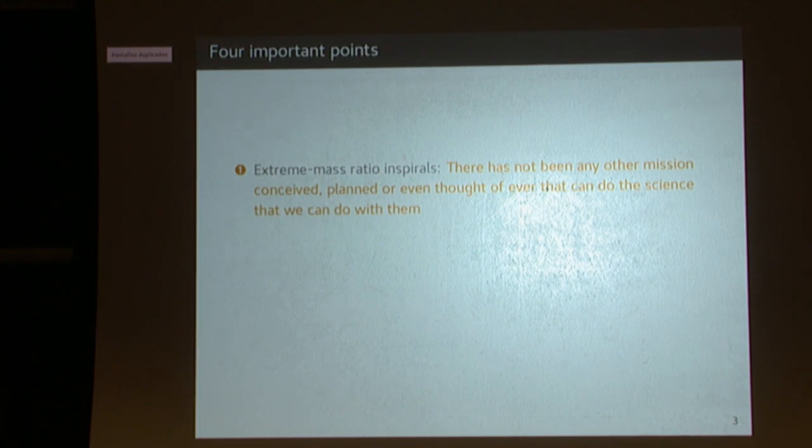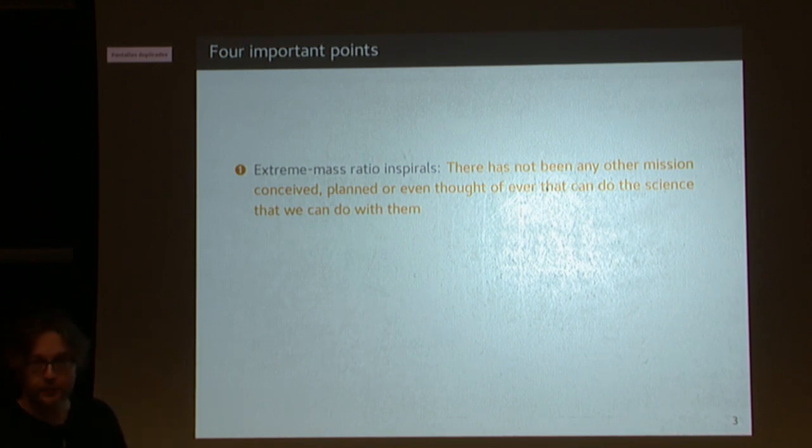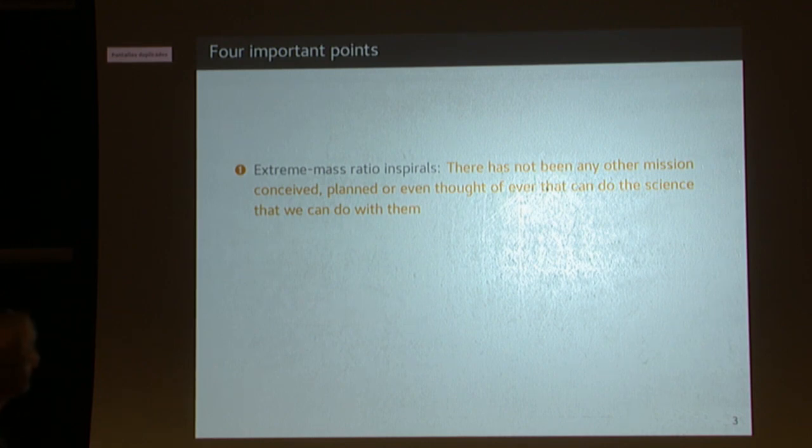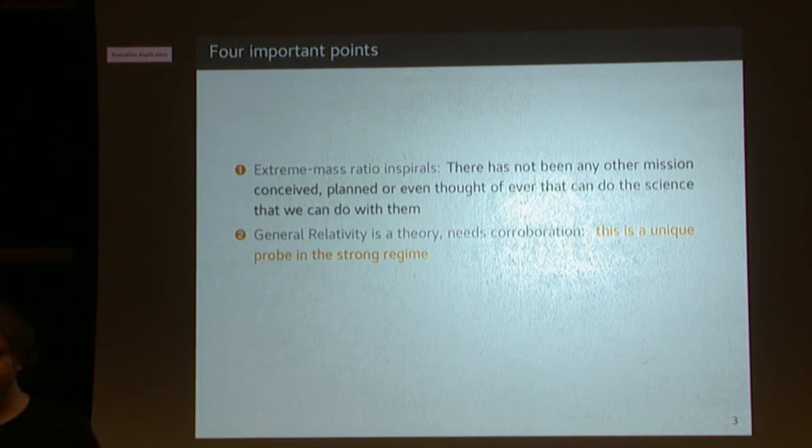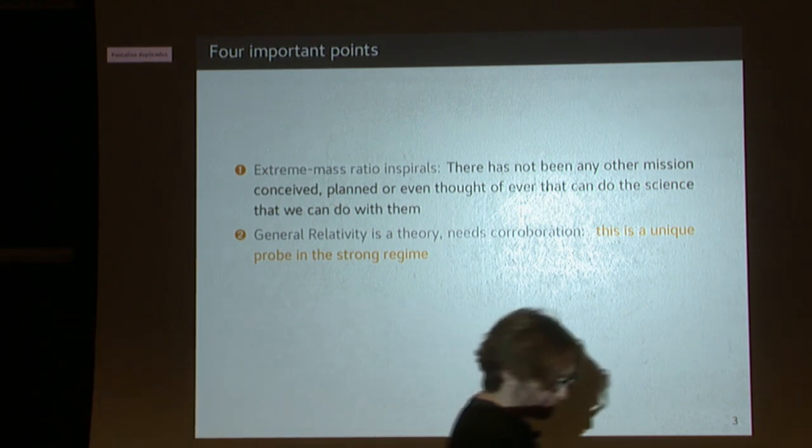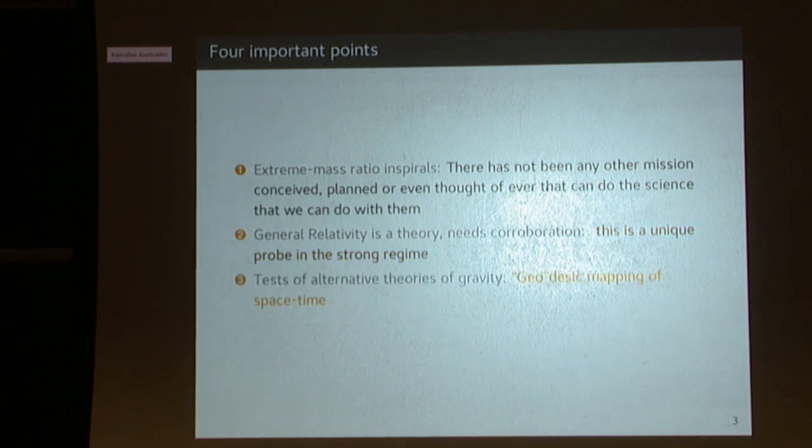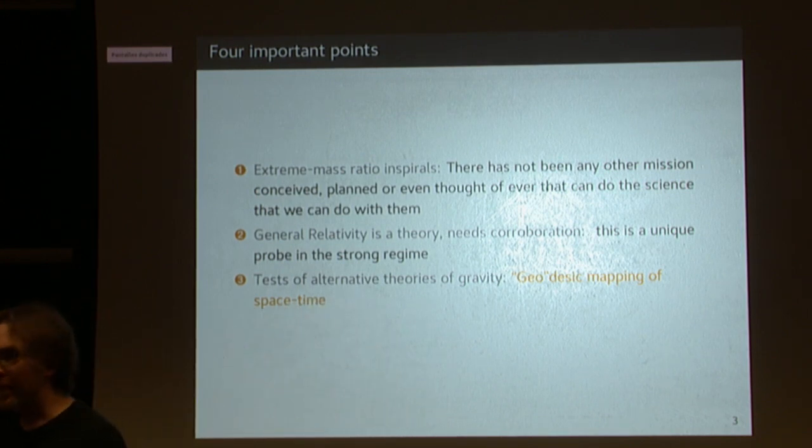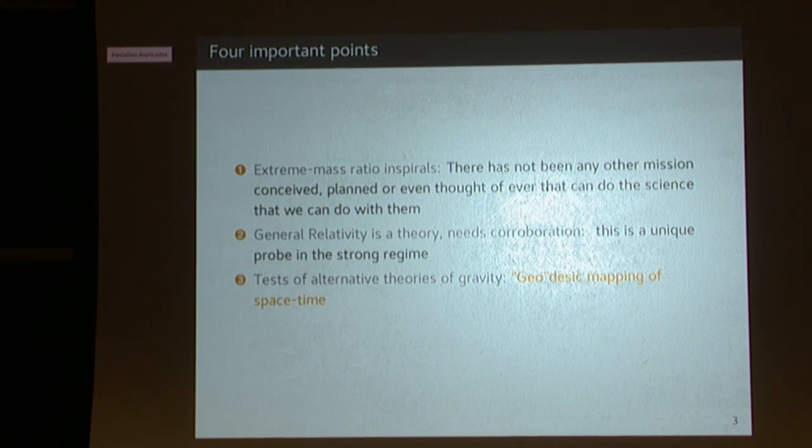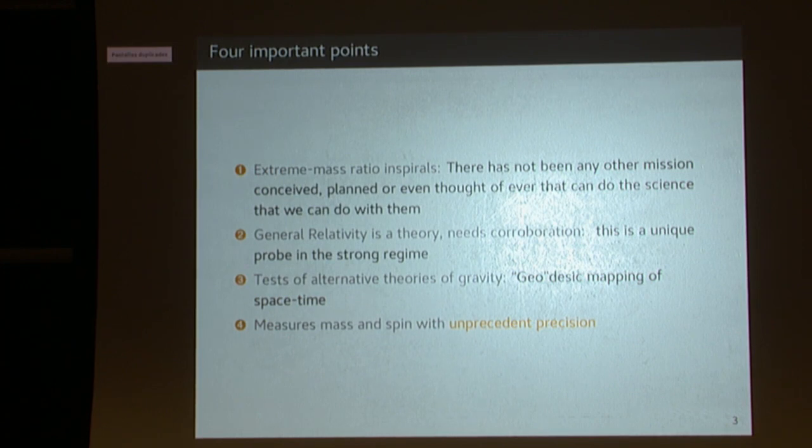This EMRI is an extreme mass ratio inspiral, 10 to the 6 solar masses, 10 solar masses. There has not been any other mission ever conceived, planned, or even thought of that can deliver the kind of science you can do with these things. General relativity is a theory, and thanks to these probes, we can probe gravity in the strong regime with very high precision.